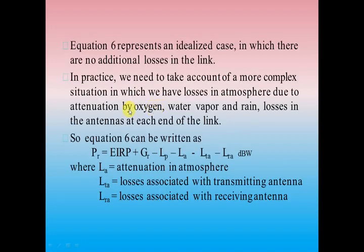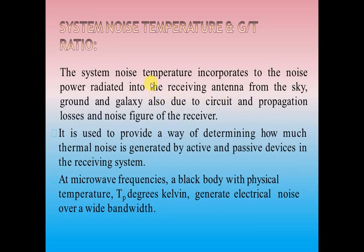The total path loss is the addition of four different parameters: attenuation in the atmosphere (LA), transmitter antenna loss, receiver antenna loss, and propagation loss. Once you add these and subtract from the amount of power transmitted plus the gain of the transmitter antenna and the gain of the receiver antenna, you will finally get the receiver antenna power. The next topic in satellite link design is the system noise temperature and G/T ratio.